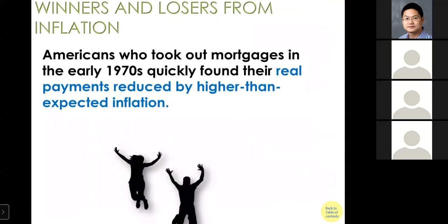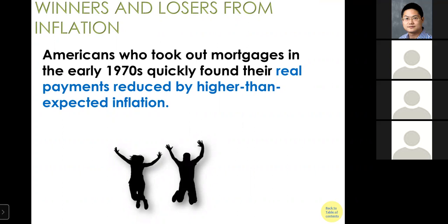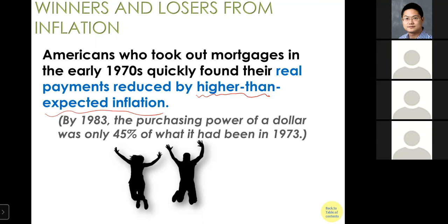A case study: Americans who took out mortgages in the early 1970s found their real payments decreasing because the economy was experiencing higher-than-expected inflation — at some point close to 20%. As long as the nominal mortgage rate was below 20%, borrowers were essentially borrowing for free in real terms. This shows how inflation has a profound impact on business and household decisions.